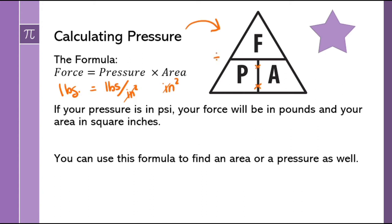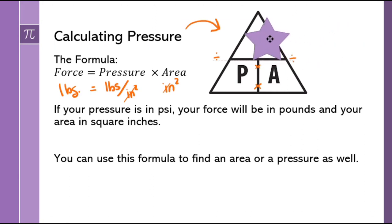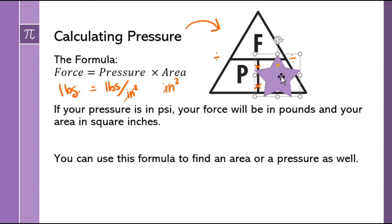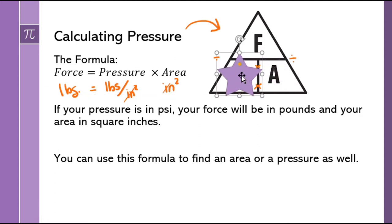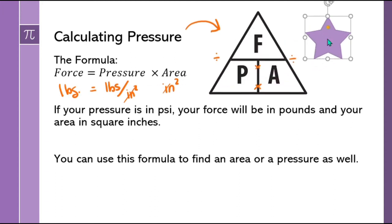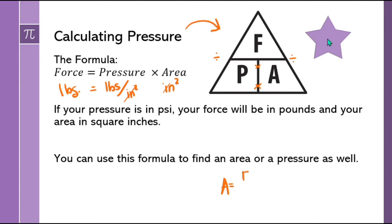There's a dividing line from the top to the bottom of the triangle. You cover up whatever you're solving for: if you want force, the triangle tells you to do pressure times area. If you want area, take force divided by pressure. If you want pressure, take force divided by area. So: area equals force divided by pressure, and pressure equals force divided by area.